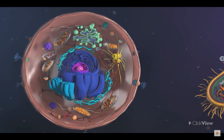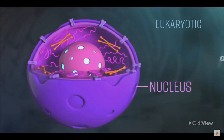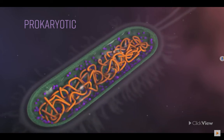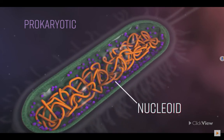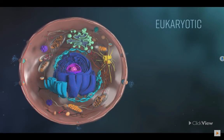The main difference is that eukaryotic cells have a double membrane-bound nucleus, which contains the cell's DNA. Prokaryotic cells do not have a nucleus, only a nucleoid, which is the central, open part of the cell where the DNA is found. Eukaryotic cells also have other large, complex, membrane-bound organelles, which prokaryotic cells lack.